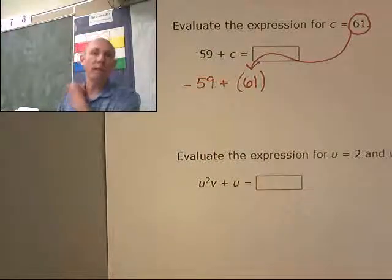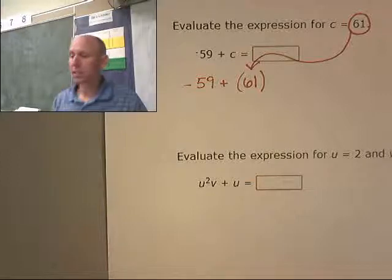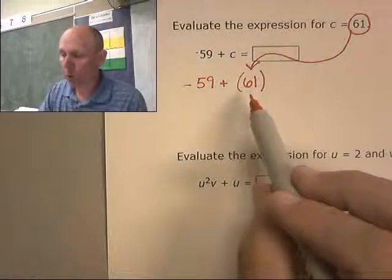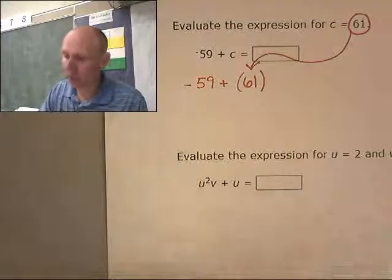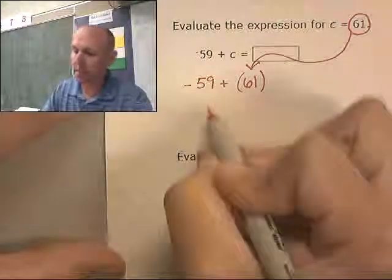And now I'm going to evaluate this. Negative 59 plus 61. Well, I have more positives. I have 61 positives, 59 negatives. There's a difference there of 2. So this is positive 2.